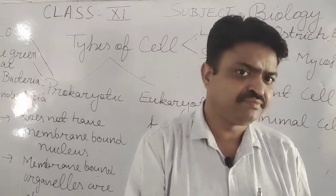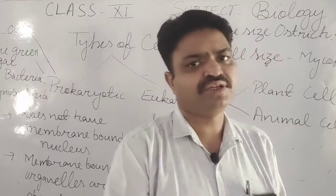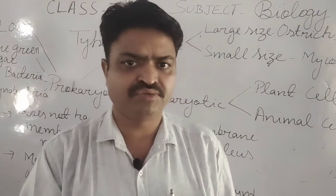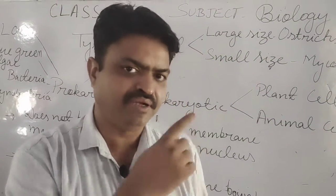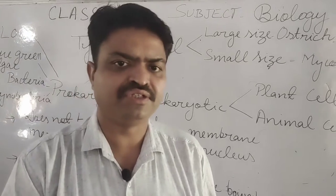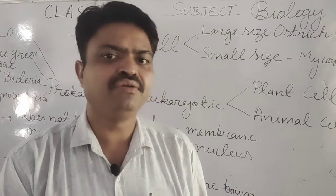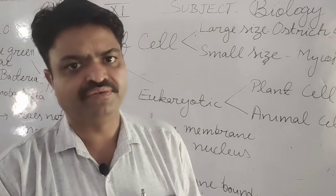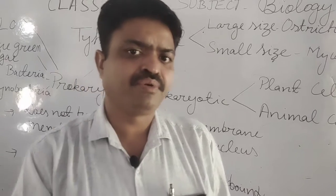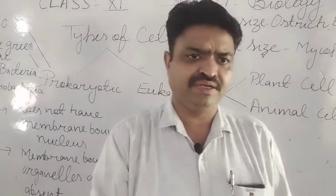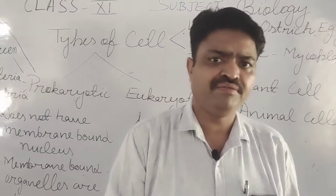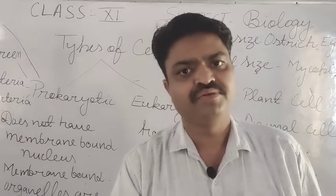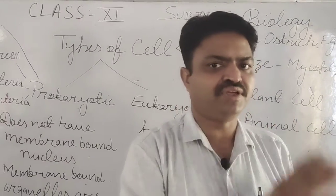Prokaryotic cells do not have a nucleolus, but in the eukaryotic cell, the nucleolus is found. With this, prokaryotic cells have a smaller size than eukaryotic cells.